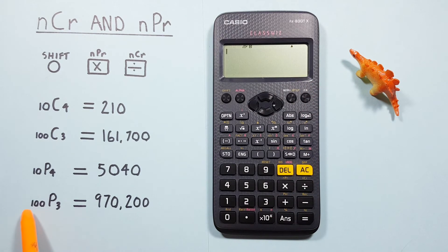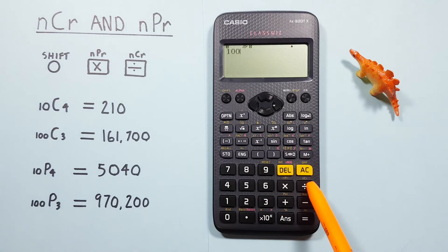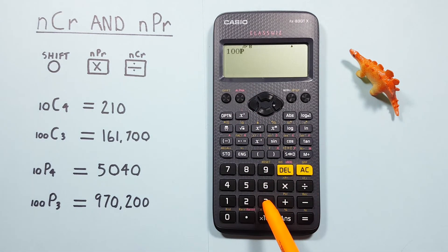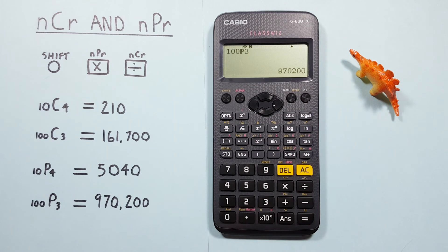Again, if we have 100 choose 3 permutations, we start by entering the 100, then the shift multiplication to see our P there, and then the 3 equals, and this gives us a result of 970,200 possible permutations.